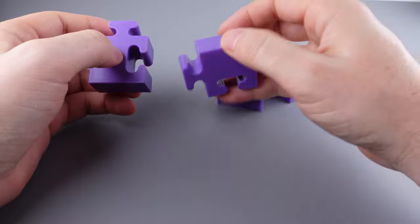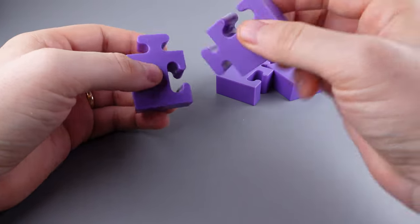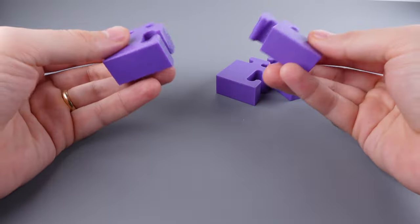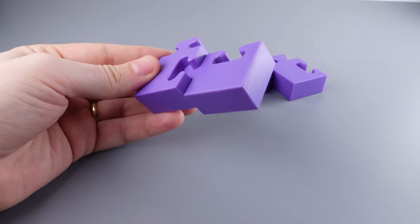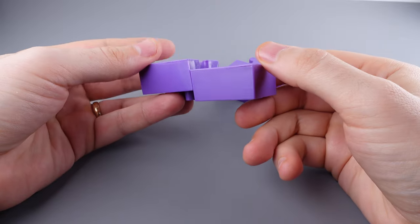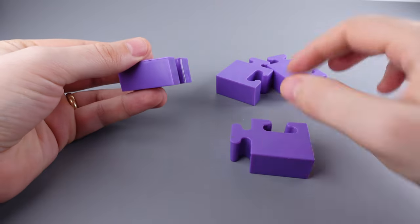So the way that we can figure out which pieces go where is just by testing two pieces. Take two pieces at random and slide them together. This happens to be a good match. You see there's a good separation there. Let me show you a bad match.